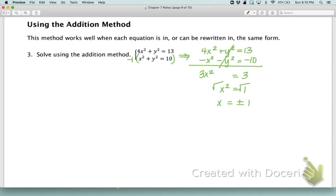That means when we plug back in, we have to plug both positive 1 and negative 1 back into our equation. I like the bottom one better because we don't have extra coefficients. When x equals positive 1, I get 1 squared plus y squared equals 10. When I subtract 1 from both sides, we get 9. We have to take the square root, so we get plus or minus 3. That means when x equals 1, I either have positive 3 or negative 3.